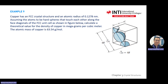For FCC, you usually need to draw this diagram with R and A. These are the things that are expected: draw a cube, label A, label square root of 2A, label 4R, and write this equation. About 3 to 4 marks for this diagram with the formula.